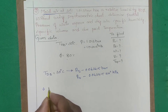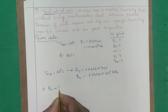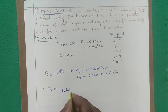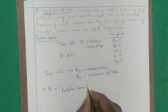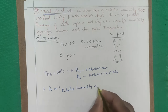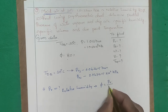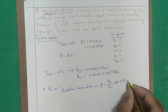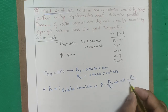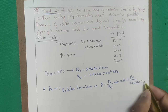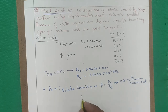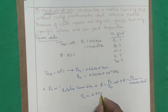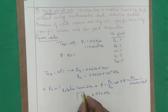Step 1 — Find PV using relative humidity: φ = PV / PVS → 0.8 = PV / 4.2415 → PV = 3.392 kPa.